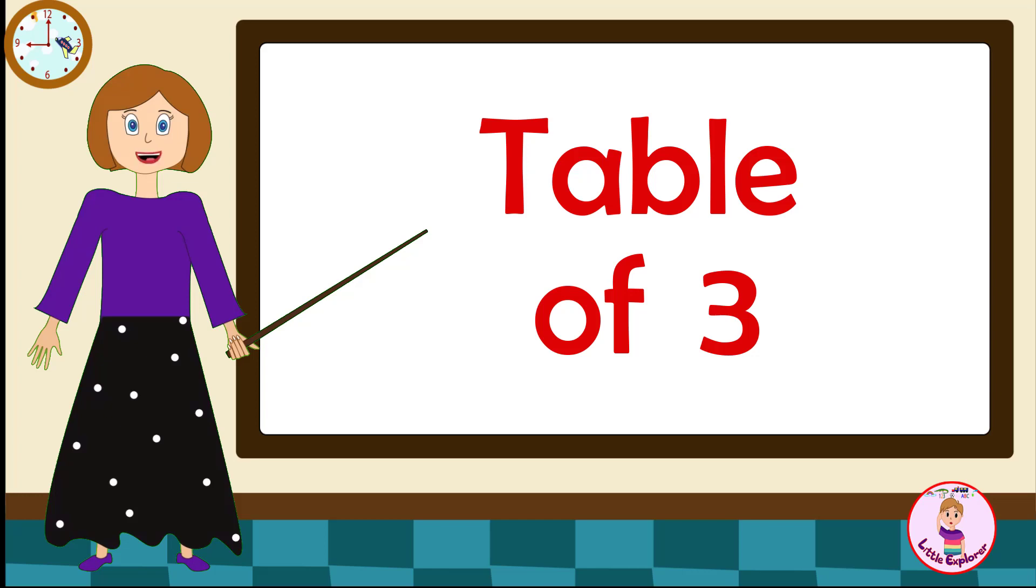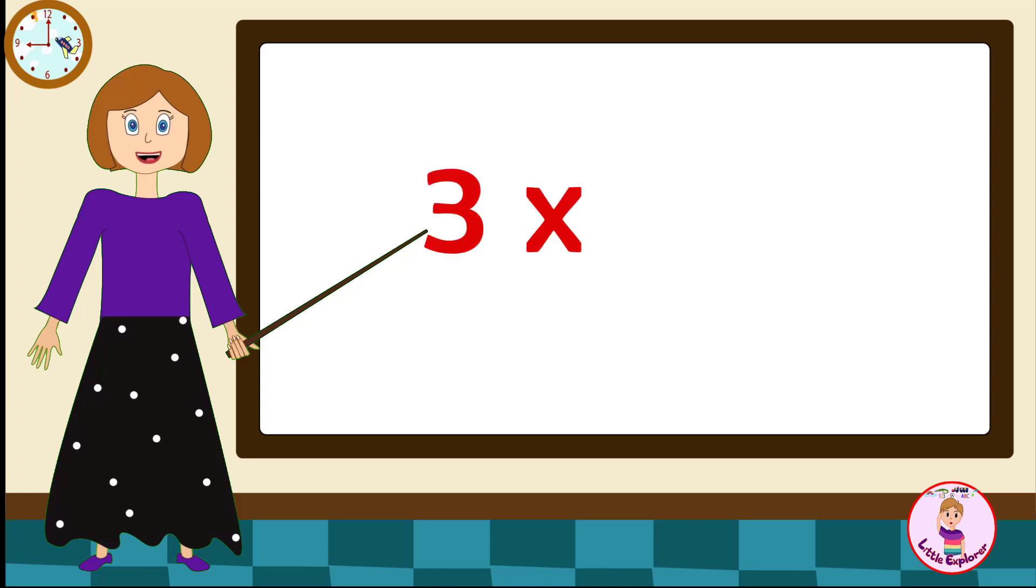Table of three. Three ones are three. Three twos are six. Three threes are nine. Three fours are twelve.